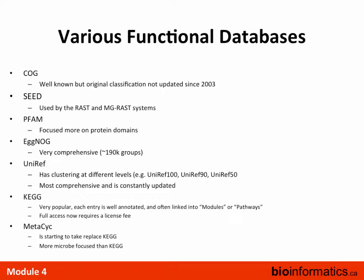The SEED database is used by RAST and MG-RAST. RAST is the genomics-only version for annotating genomes, and MG-RAST is the metagenomics server. The SEED database annotates proteins using subsystems and relates them in a hierarchical structure. PFAM is more focused on protein domains, tending toward smaller proteins. The eggNOG database, related to COG originally, is very comprehensive and still being updated — it uses automated clustering of proteins into groups, with around 190,000 different protein families.